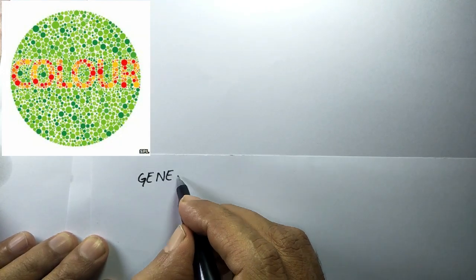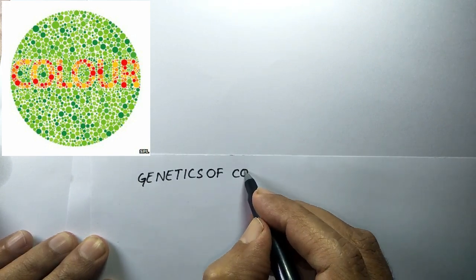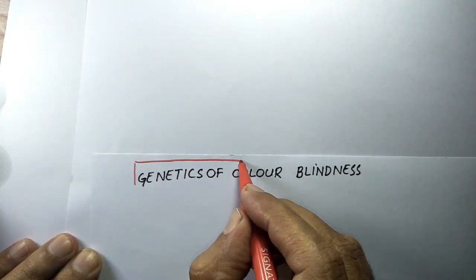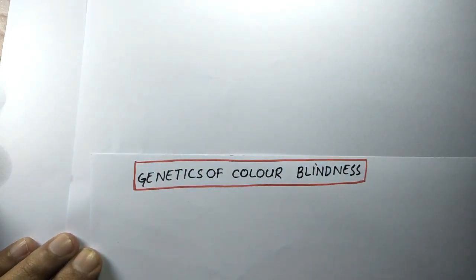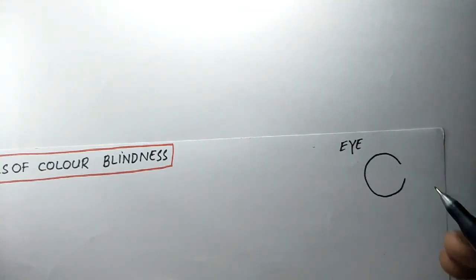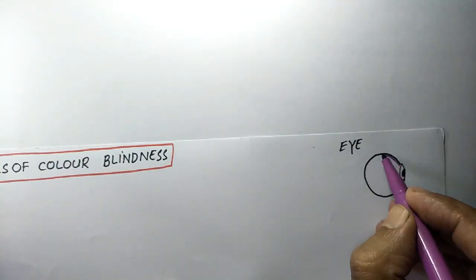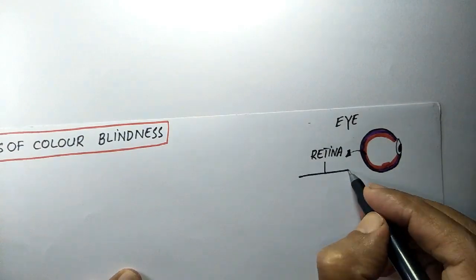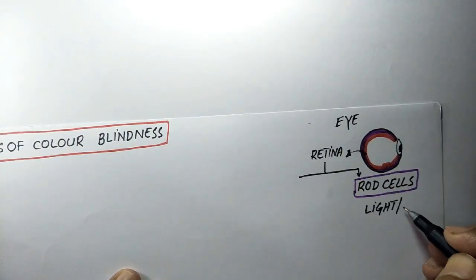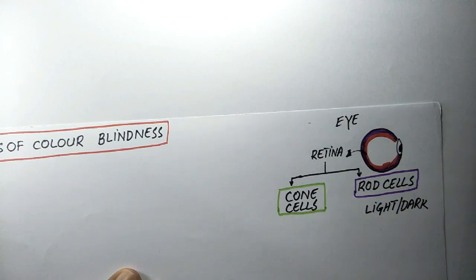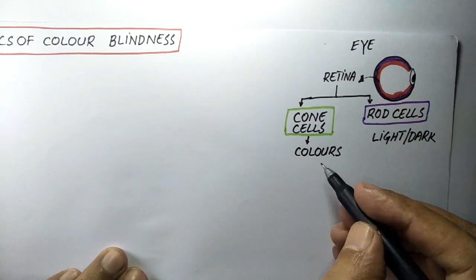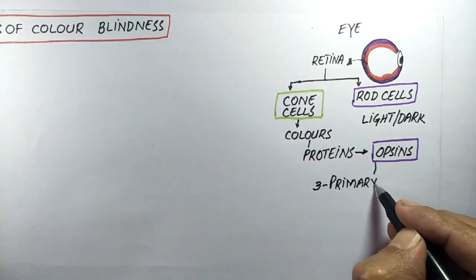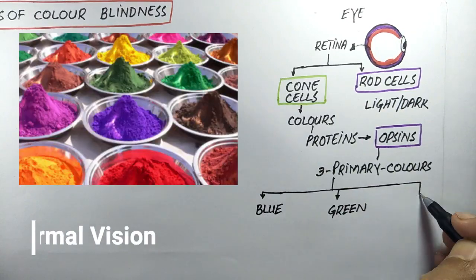Today's topic is the genetics of colorblindness. Colorblindness is the condition in which a person is unable to perceive primary colors such as blue, green, and red. The innermost sensitive layer of the eye is the retina, which contains two types of cells: cone cells and rod cells. Rod cells are responsible for distinction between light and dark, whereas cone cells are responsible for the perception of colors. In cone cells, special proteins called opsins are present for the perception of three primary colors: blue, green, and red.